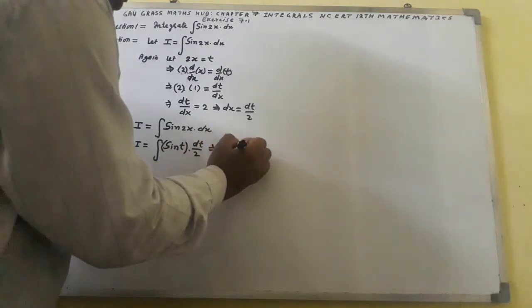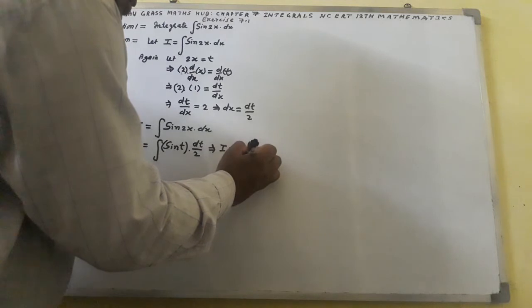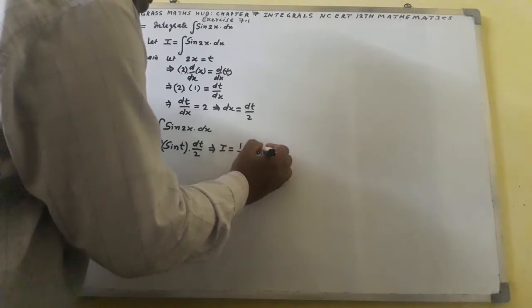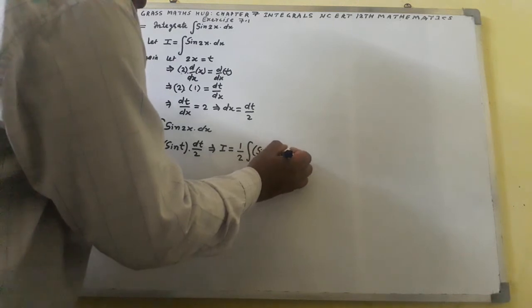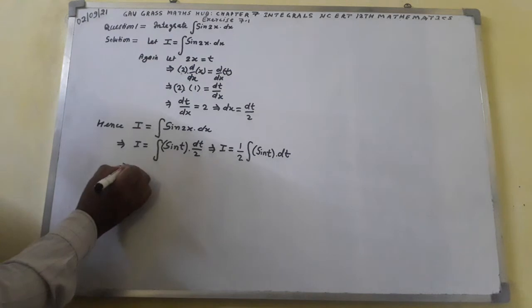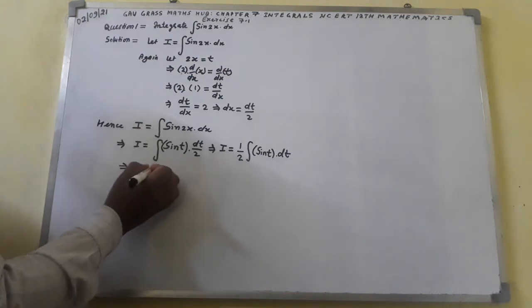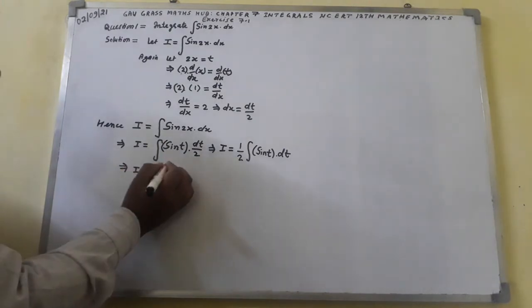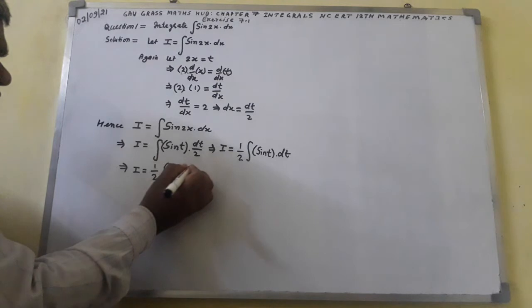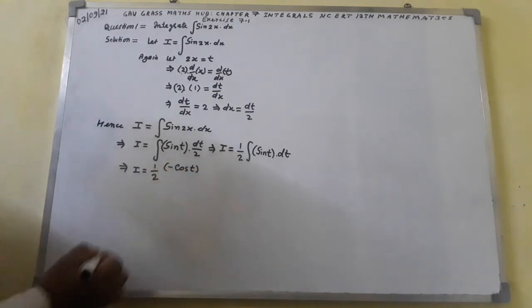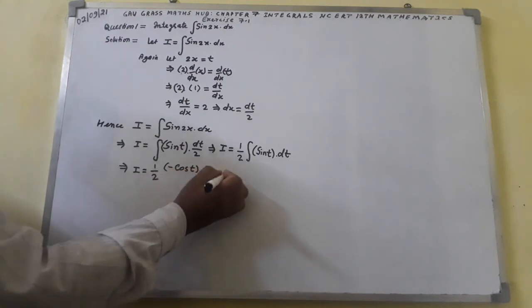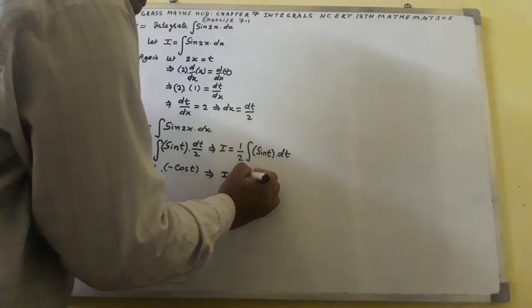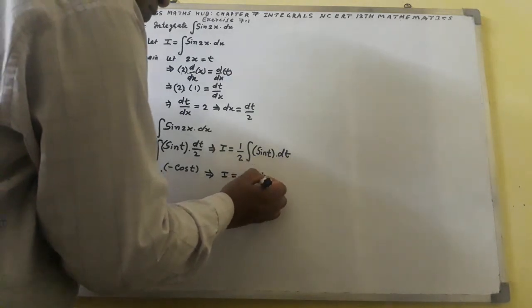1 over 2 is a constant that will be popped out. So I is equal to (1/2) integral sin(t) dt. We shall get I equal to (1/2) · (−cos t), which implies I equals −cos(t) over 2.